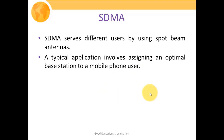SDMA serves different users by using spot beam antennas. Instead of one isotropic antenna, there are multiple directional antennas whose coverage areas are called spot beams. A typical application involves assigning an optimal base station to mobile phone users who want to transmit or receive information.